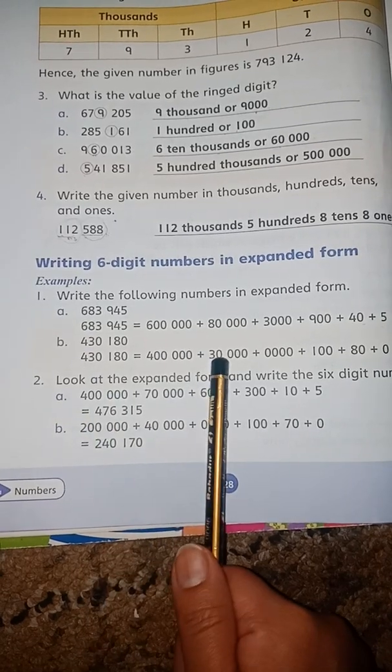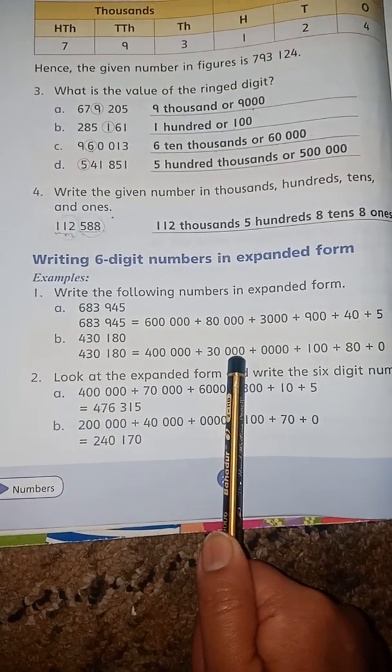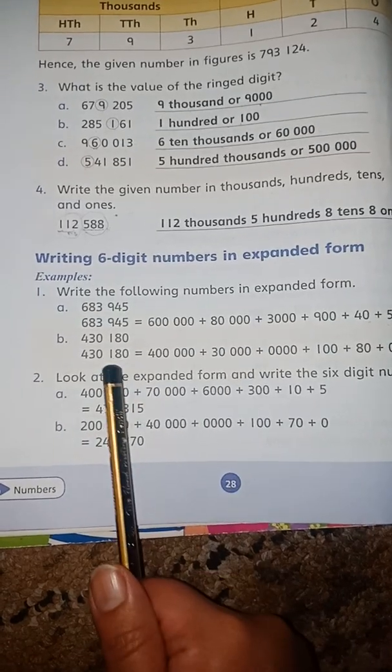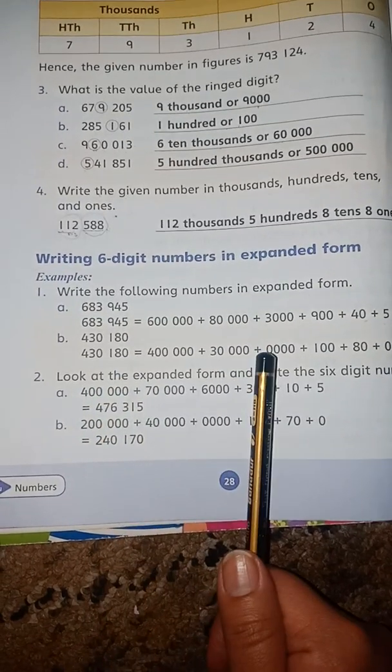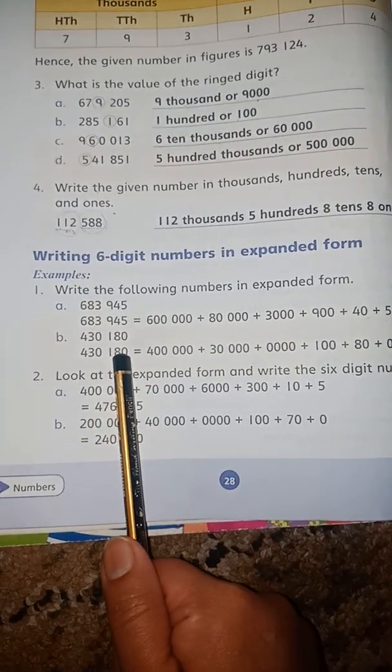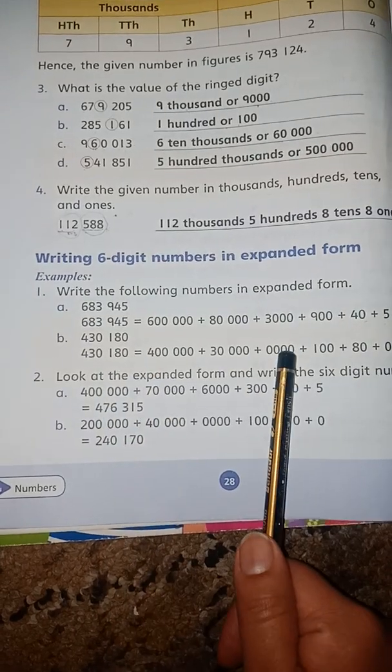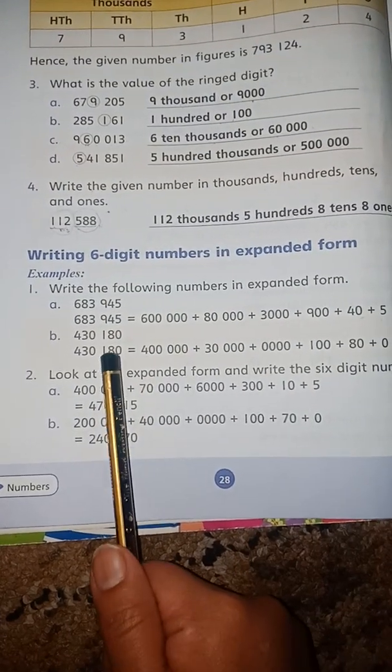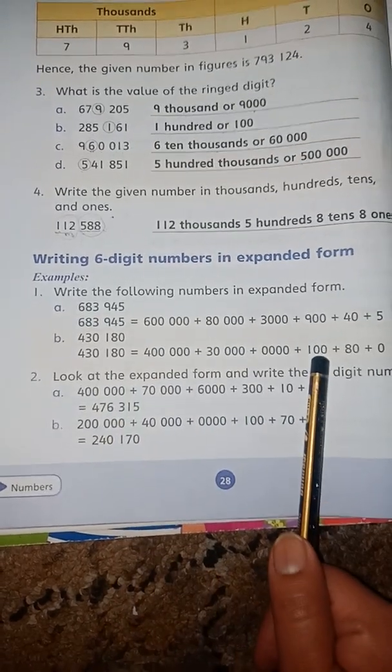For part B, 430,180 in expanded form: first digit 4 with 5 zeros: 400,000, plus 3 with 4 zeros: 30,000, plus next digit 0 with 3 zeros,